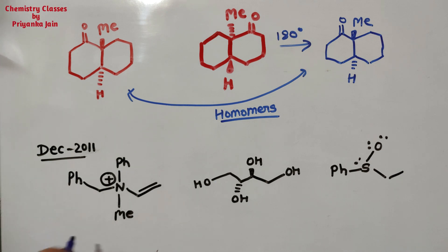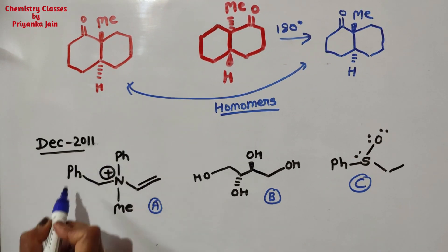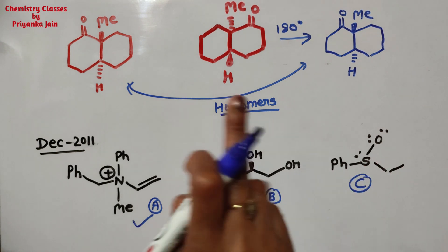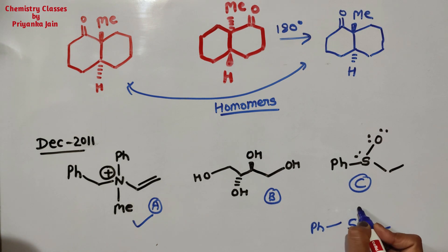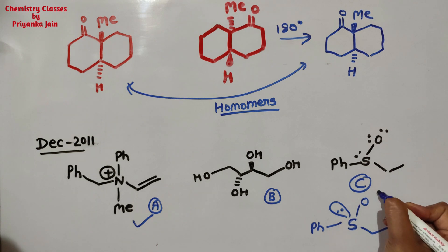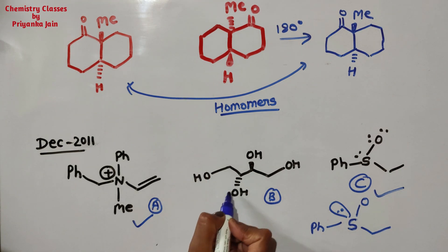Now see this question from December 2011 — we have to find the optically active compound among A, B, and C. In molecule A, nitrogen is the central atom with four different groups: phenyl, methyl, CH₂Ph, and another group — four different groups attached, making it a chiral center. So this is optically active. In molecule B, sulfur is attached to four groups: phenyl, another group, oxygen, and a lone pair of electrons — this is also a chiral center, so this option is also a right answer.